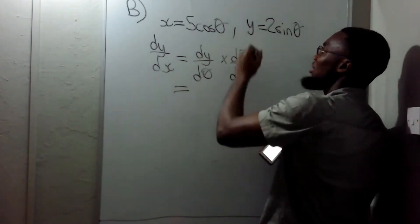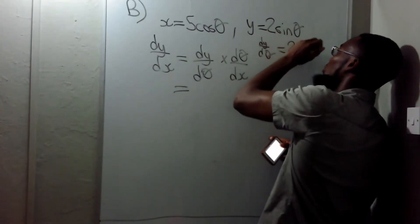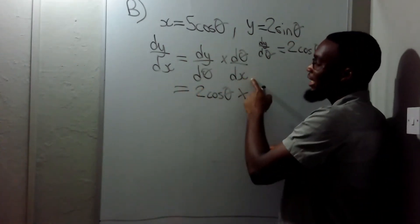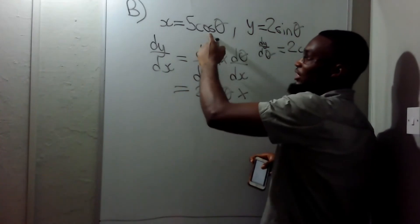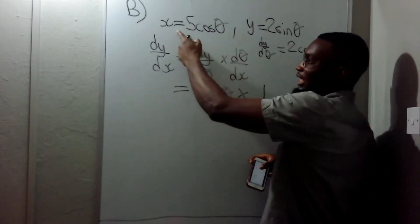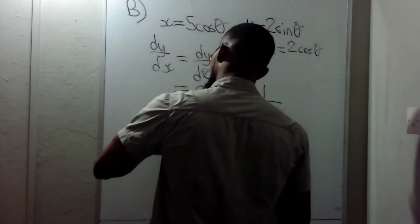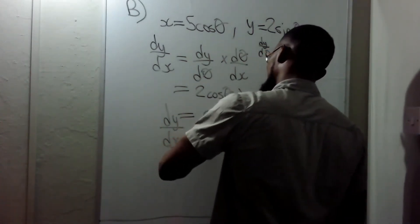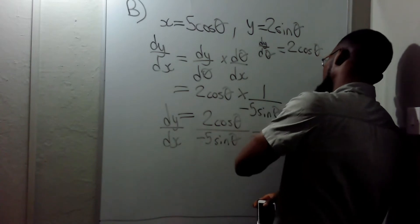Differentiating y with respect to θ: dy/dθ = 2cos(θ), since the derivative of sine is cosine. For dθ/dx, since x = 5cos(θ), differentiating gives dx/dθ = −5sin(θ), so dθ/dx = 1/(−5sin(θ)). Therefore dy/dx = 2cos(θ) / (−5sin(θ)), and since cos/sin is cot, that gives dy/dx = −(2/5)cot(θ).